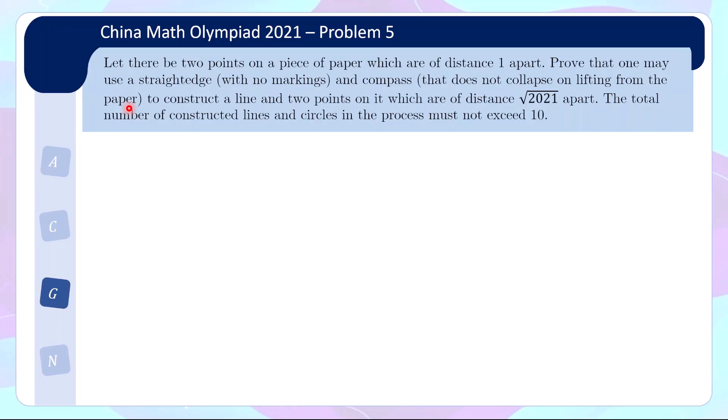Okay, so we want to only use these two operations to draw somehow construct a line and two points on it which are of distance √2021 apart, and there's a restriction on the number of lines and circles.